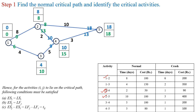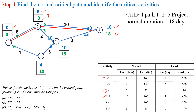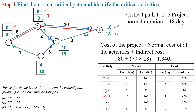Next we determine the critical path by identifying the critical activities. For critical activities, earliest event time equals latest event time. Activities 1-2 and 2-5 satisfy this condition, so the critical path is 1-2-5 and the project duration is 8 plus 10, which is 18 days.